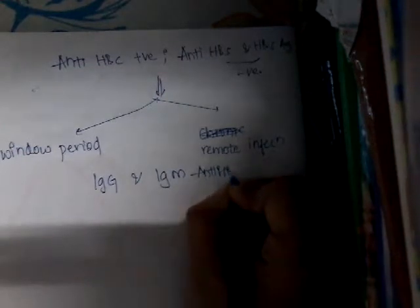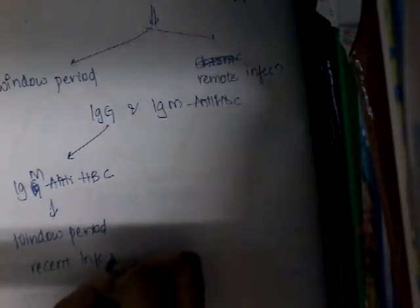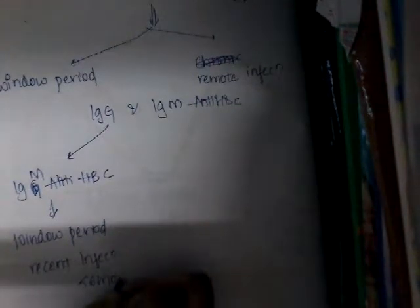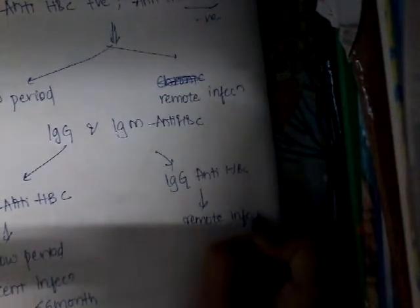If it is IgM anti-HBc, then it is said to be in the window period and represents recent infection — less than 6 months. If it is IgG anti-HBc, then it is a remote infection. That is the major difference between these two scenarios.